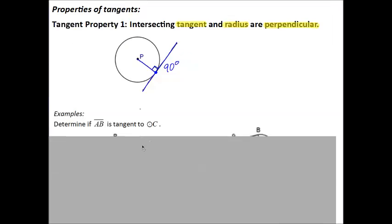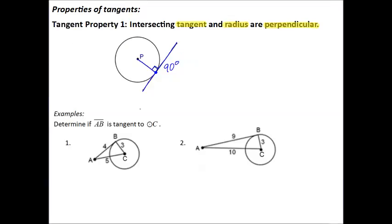So let's see how we can use this in some examples. Determine if AB is tangent to circle C. So what we're really trying to find out is, is this angle a right angle and is therefore the triangle a right triangle. And how do we do this? We use the Pythagorean theorem.